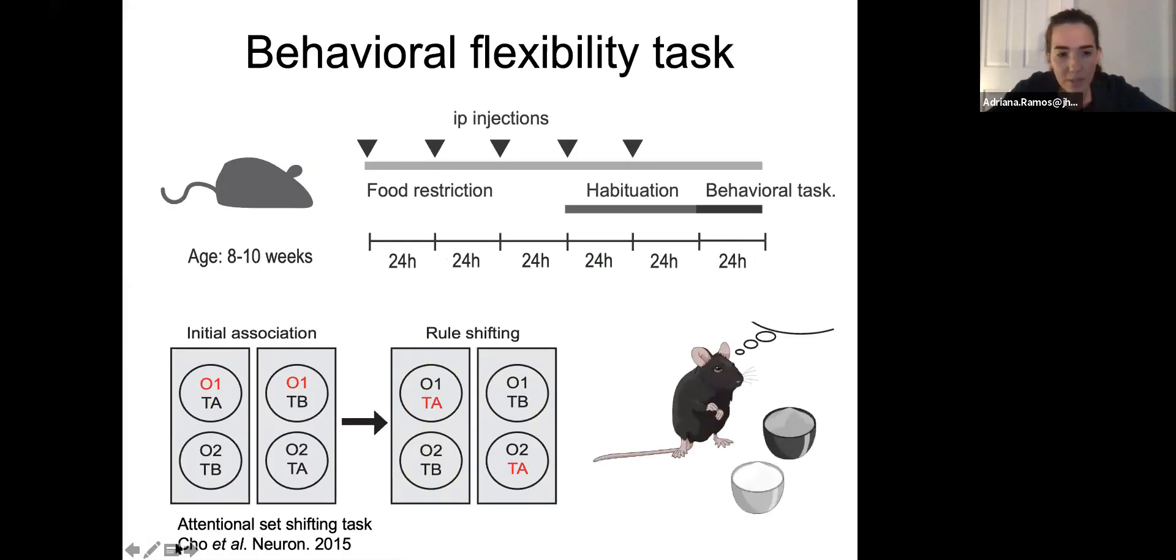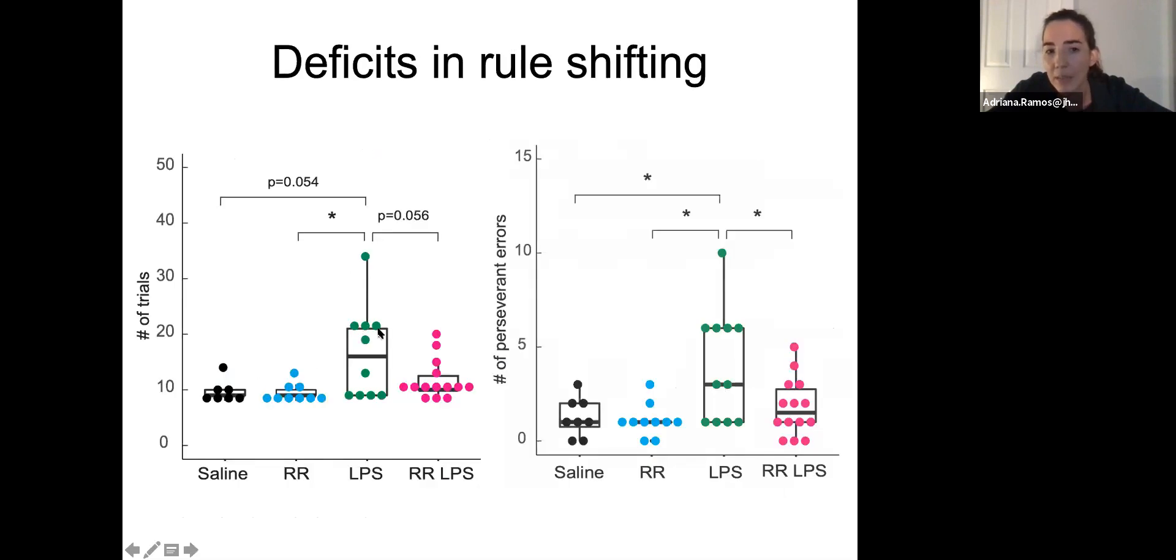First thing I did was test how these animals perform on the behavioral flexibility task. This task has two main portions, the initial association and the rule shifting. This rule shifting, this is a dimensional shifting, is what tells us how flexible the mice are. What I found in my LPS mice is that they didn't present deficits on the initial association portion, but they did present deficits on the rule shifting. As you can see, there is some variability on the performance of the LPS mice, but we consistently see deficits in these mice.